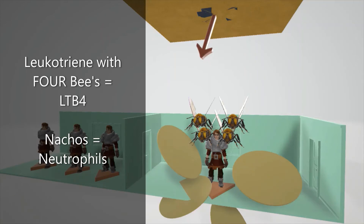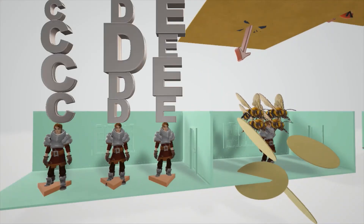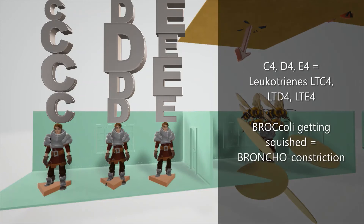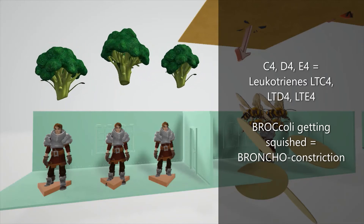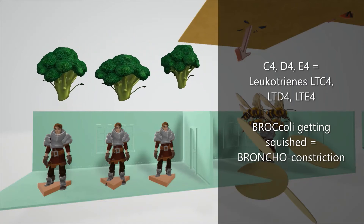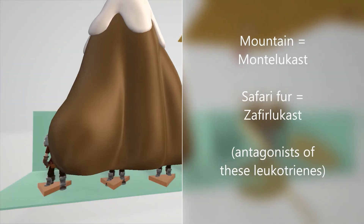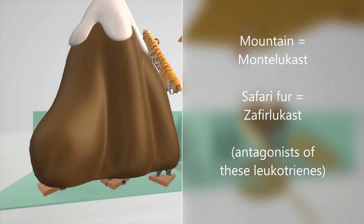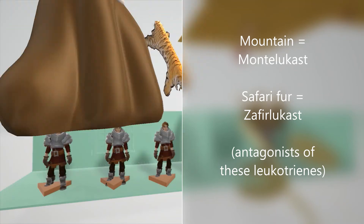Around Luke there are a lot of nachos coming towards him, helping us remember that LTB4 is responsible for neutrophil chemotaxis — an increase in LTB4 leads to the recruitment of lots of neutrophils. Luke also has C, D, E, and E to remind us of LTC4, LTD4, and LTE4 in order. There's broccoli getting really thin to represent increased bronchial tone, which these leukotrienes are responsible for. They are smashed by a mountain with safari fur — representing zafirlukast — a selective antagonist of these leukotrienes.